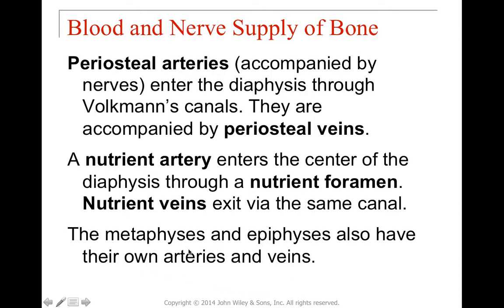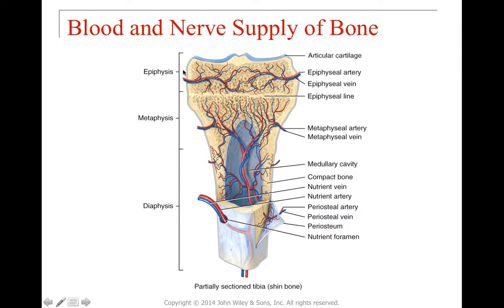The metaphysis and epiphysis are served by their own separate arteries and veins. Here on the diagram, the epiphysis has an epiphyseal artery and vein. There is an epiphyseal line — the growth plate — which separates the epiphysis from the metaphysis with no crossover between their vasculature. The metaphysial artery and vein serve the metaphysis. Nutrient foramina in the diaphysis bring in the nutrient artery and vein. The periosteal artery and vein travel through the periosteum surrounding the diaphysis. This is a depiction of the tibia.